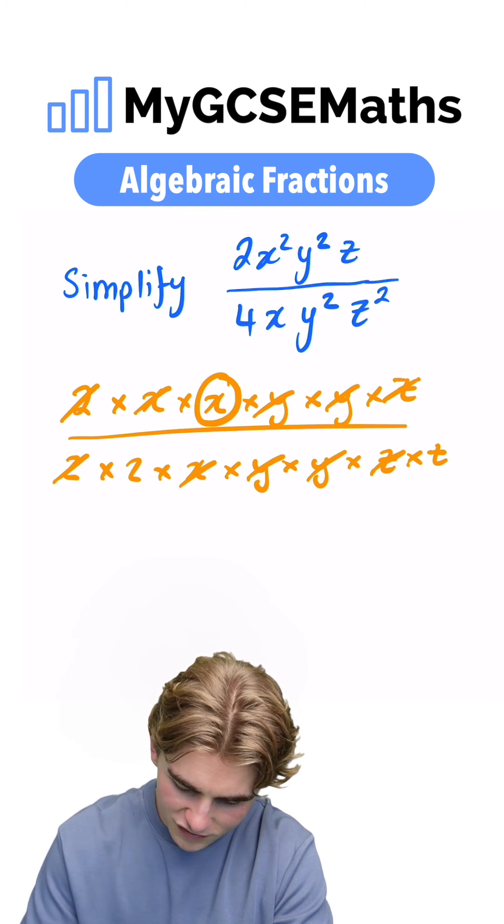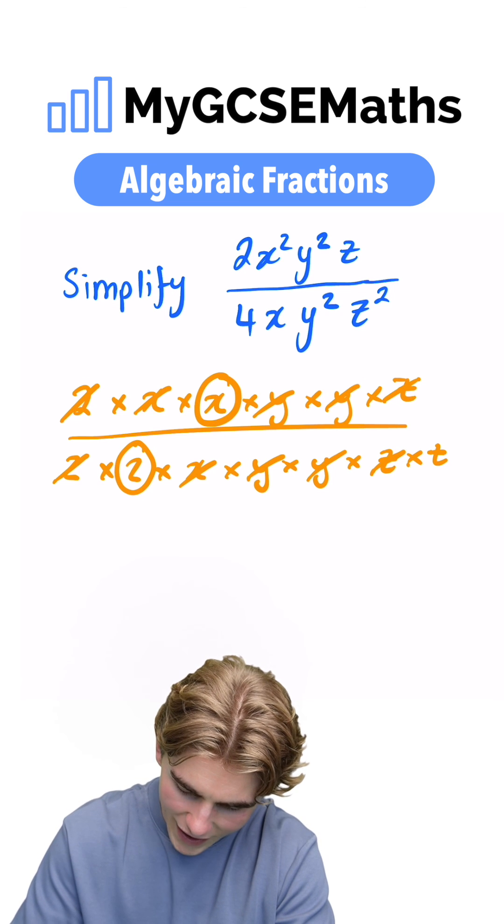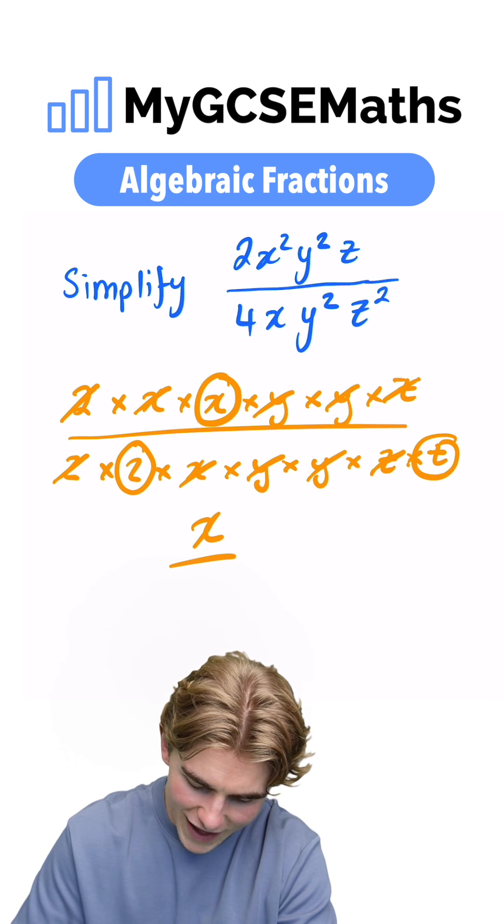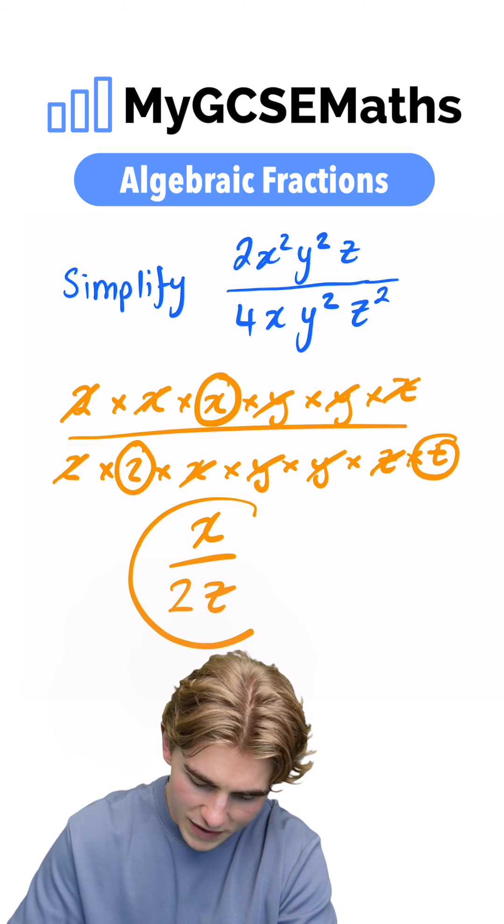On the top we're left with an x. On the bottom we're left with a 2 and a z. So we can write this as x over 2z. That's going to be our final answer.